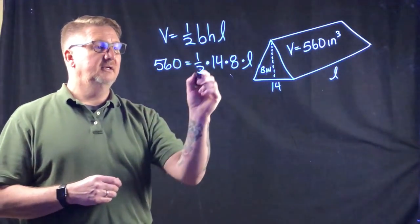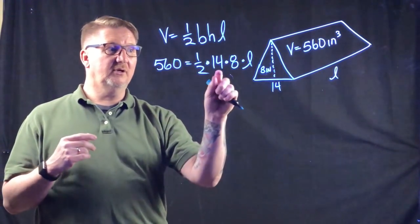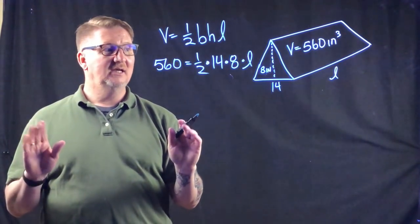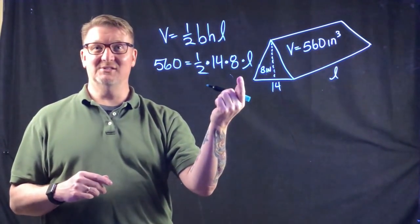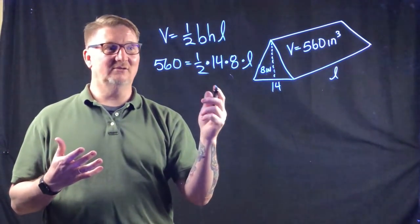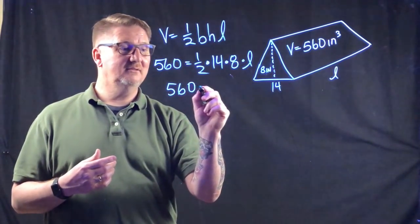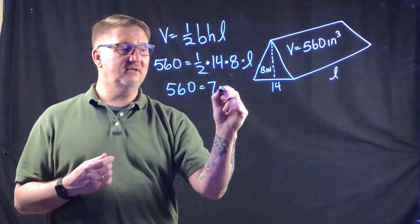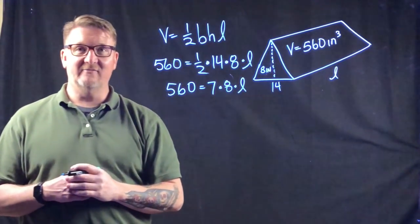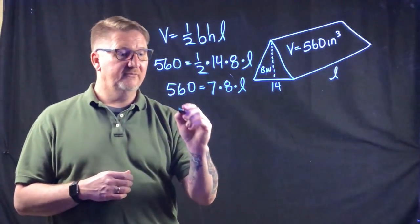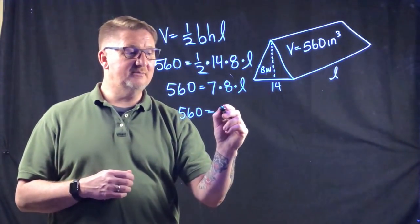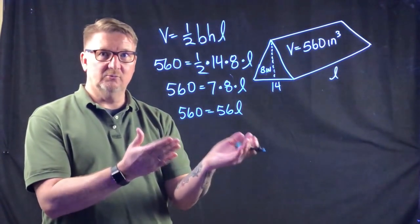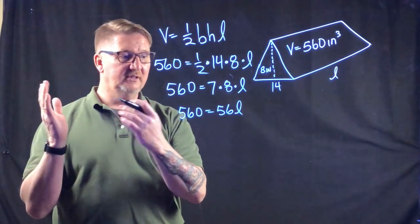Again, I'll take half of one of the numbers. Half of 14 is 7, so I replace one half times 14 with 7, then multiply 7 times 8 which is 56. The equation becomes 560 equals 56L.